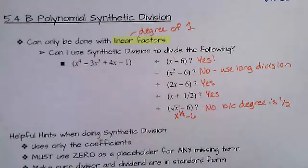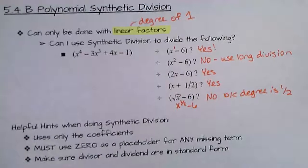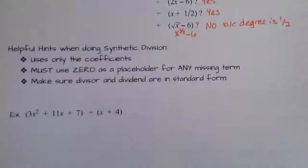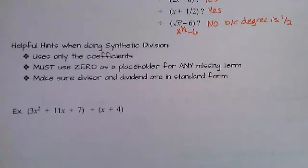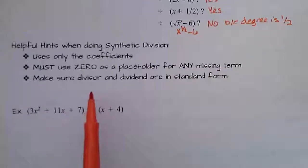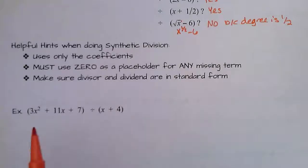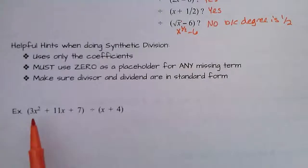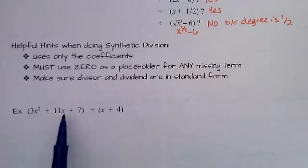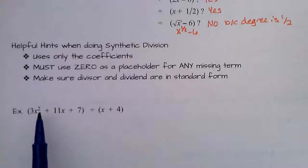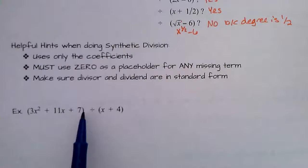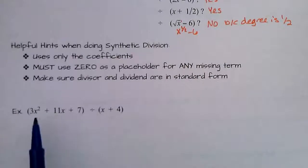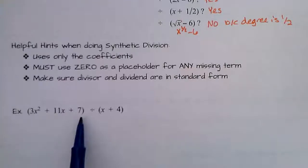Some helpful hints about synthetic division: it uses only the coefficients, so we are not going to actually write the x's. You have to use zero as a placeholder for any missing terms. And you have to make sure your divisor and your dividend are in standard form — meaning largest exponent first, working its way down. For example, x squared, x to the first, x to the zero are in decreasing order, so that is in standard form.